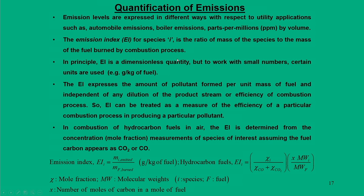To quantify emissions, one approach is the emission index (EI). The emission index for any species i formed due to combustion is the ratio of the mass of the species to the mass of fuel burnt by the combustion process. EI is dimensionless but is typically expressed in grams per kg of fuel. EI expresses the amount of pollutant formed per unit mass of fuel, independent of dilution or combustion efficiency.